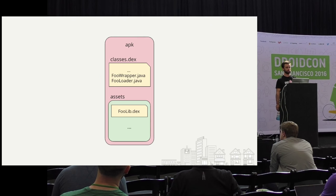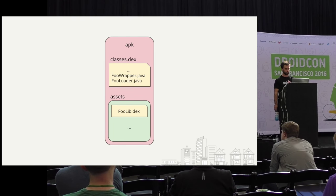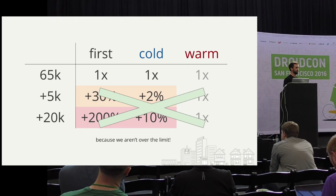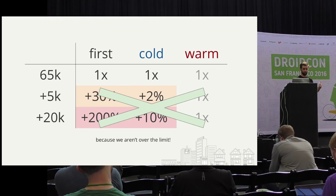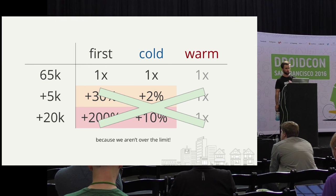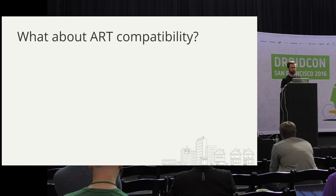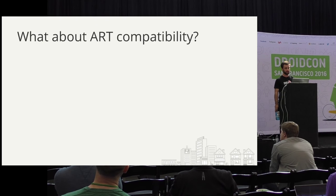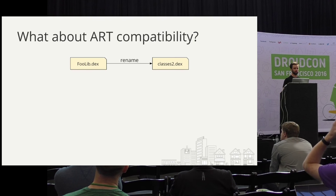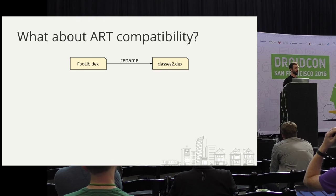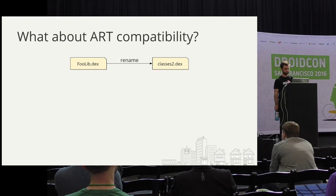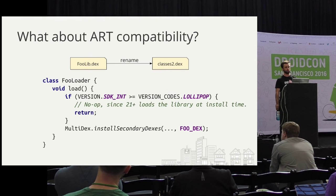So packaging it all together: we're shipping the foo library as an asset, and then in our classes.dex file we have a loader and a wrapper for this library. The interesting thing is if you happen to be in a situation where pulling out certain libraries can pull you under the limit, you really don't have to deal with the startup cost at all. For those of you who ship apps targeting ART and don't want a whole separate branch for this: at some point you just ensure that your foo library, instead of being in assets, goes in the root directory named classes.dex, and then it will get automatically loaded when we call dexToOat. When you have your loader, if you're above Lollipop, you can just no-op.